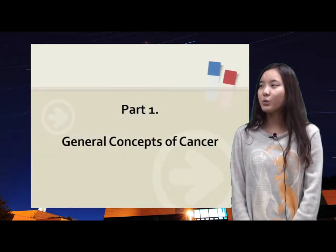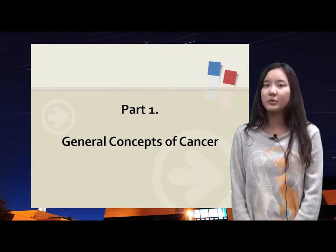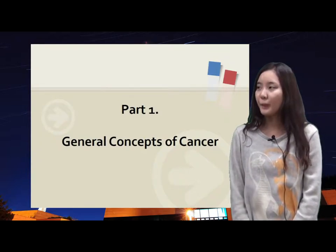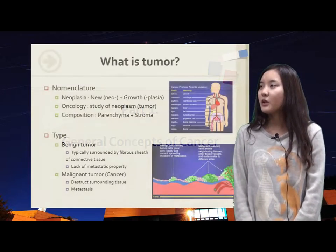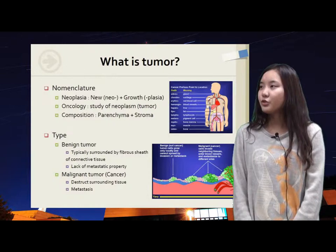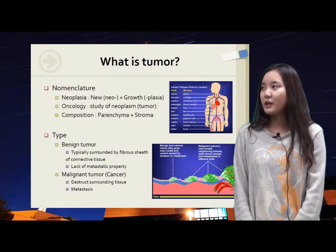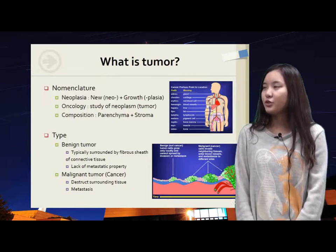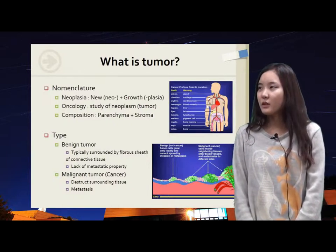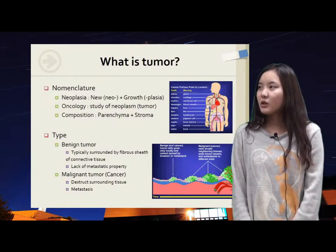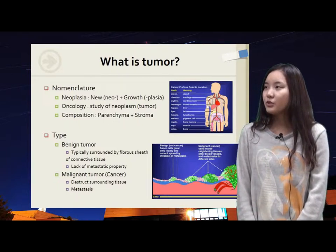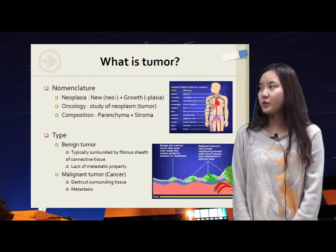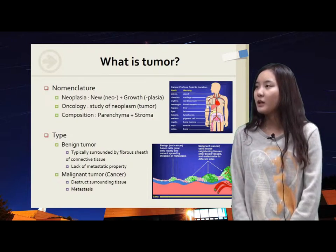Part 1 is about general concepts of cancer. What is tumor? For nomenclature, tumor or neoplasm means new growth. Oncology is the study of neoplasm. Tumor consists of two parts: parenchyma and stroma.